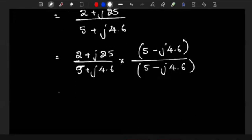So when we do the same thing in the numerator, we have 2 multiplies 4.6, we get minus j 9.2 because of that negative. And then 25 multiplies 5, we get positive j 125.